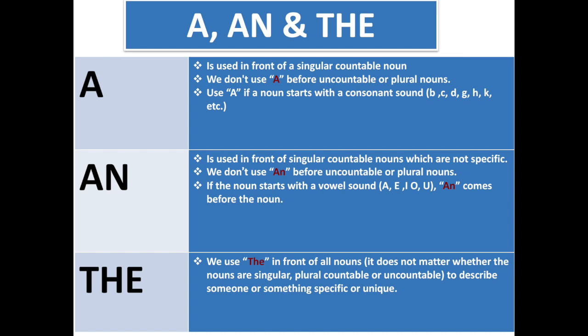An is used in front of singular count nouns which are not specific. We don't use an before uncountable or plural nouns either. If the noun starts with a vowel sound though, we use AN, like A, E, I, O, U. Those are all the vowels, and we use AN before those nouns.